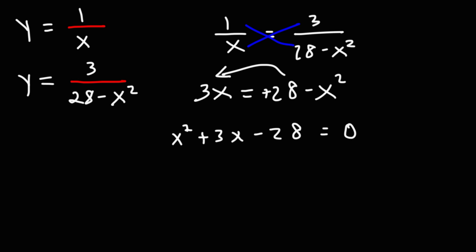x squared plus 3x minus 28 equals 0. How can we factor this trinomial? In order to factor it, we need to find two numbers that multiply to the constant negative 28, but that add to the middle coefficient 3. So factors of 28 are 1 and 28, 2 and 14, and 4 and 7.